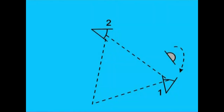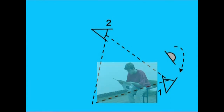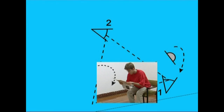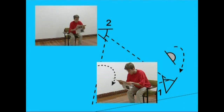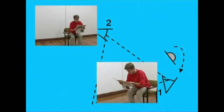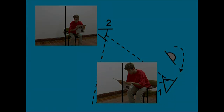Kameraren bi kokaguneak kampoaldeko angelu kontrajarretan daudenean, plano bateko eta besteko mugimenduen norabideak kontrakoak dira. Lehenengo kokagunetik artutako planoan, plano amerikarrean, aktorea eseri egiten da; bere gorputzak kuadroaren ezkerretik eskuinera egiten du. Bigarren kokagunetik artutako planoan, plano orokorrean, aktoreak mugimendua errepikatzen du; oraingoan ordea, bere gorputzak eskuinetik ezkerrera egiten du. Muntatzerakoan, ez dugu jarraipen arazorik izango, bi planoetan aktorea kuadroaren eskuin aldean eduki dugulako.